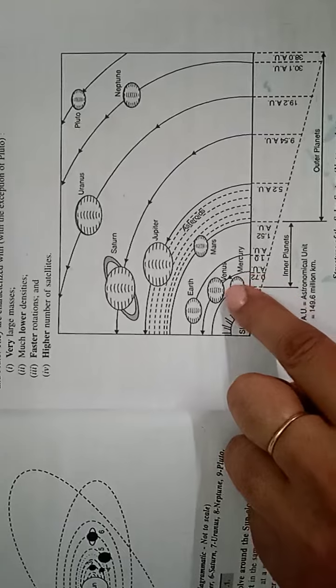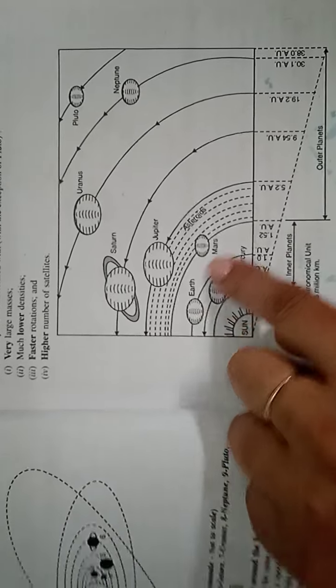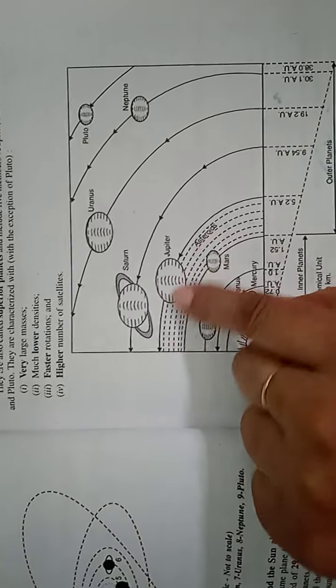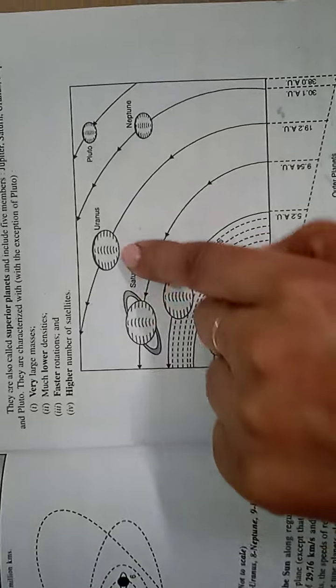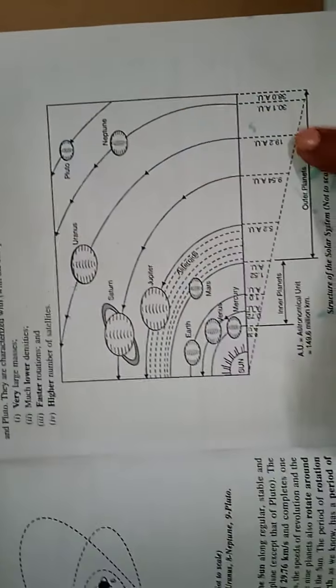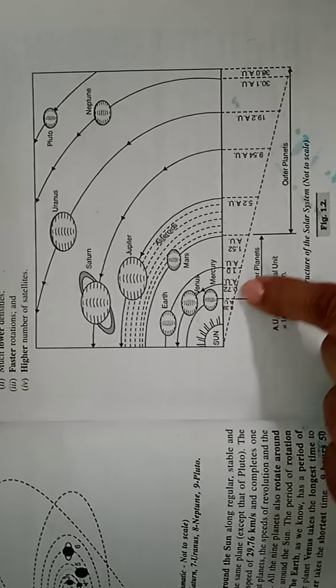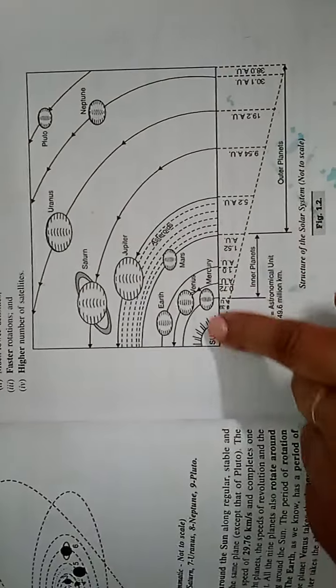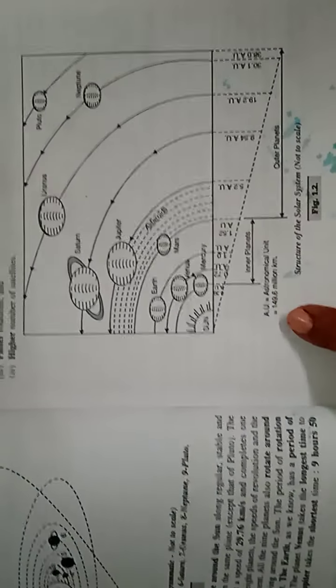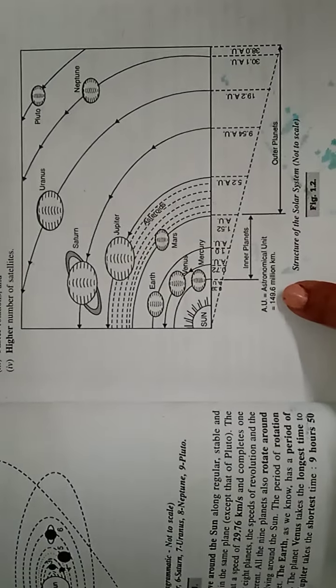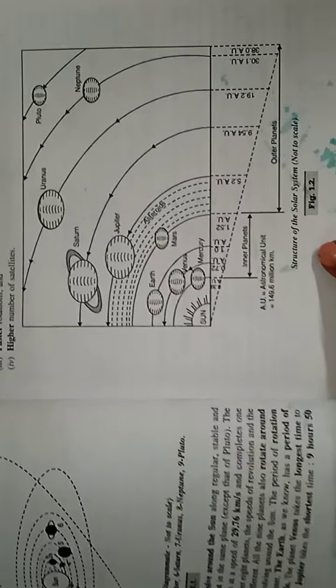The solar system diagram — not to scale — shows the Sun, then Mercury, Venus, Earth, Mars, the asteroid belt, Jupiter, Saturn, Uranus, Neptune and Pluto. The diagram also describes distances. The astronomical unit (AU) is equal to 149.6 million kilometers, representing the distance between the inner and outer planets.